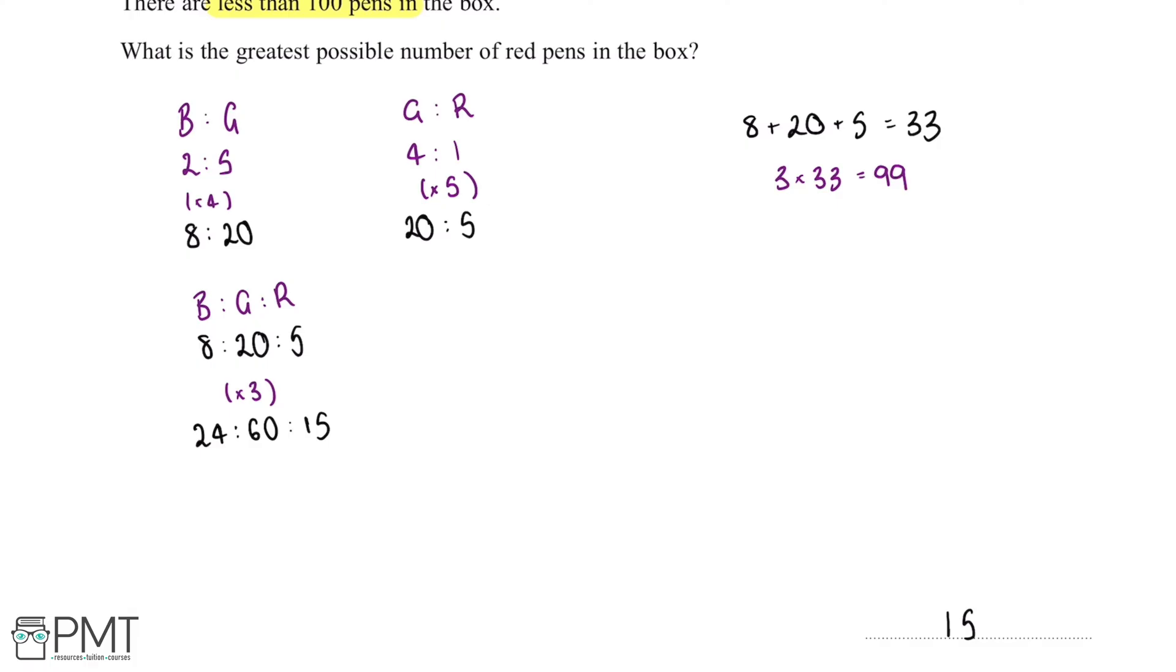Now this question is worth three marks. We'll get our first mark for putting the two ratios in a form so that we are able to combine them, we'll get our second mark for combining the ratios, and our third mark for the correct answer.